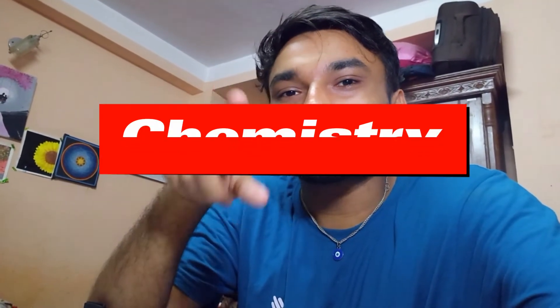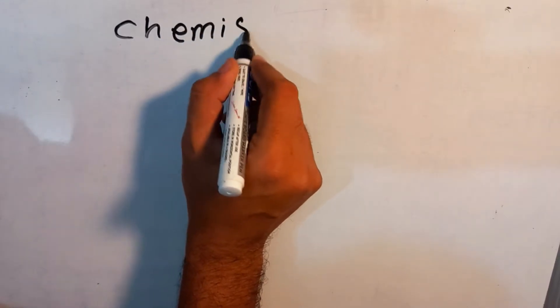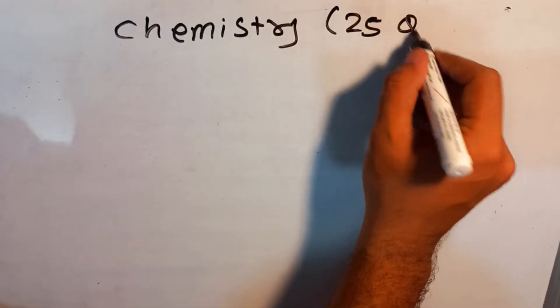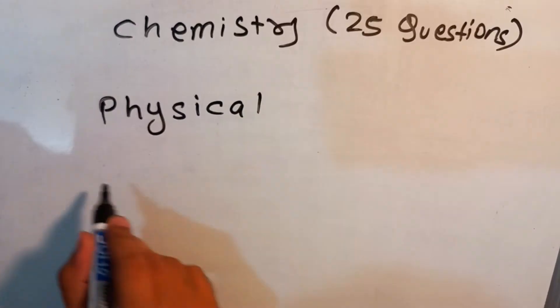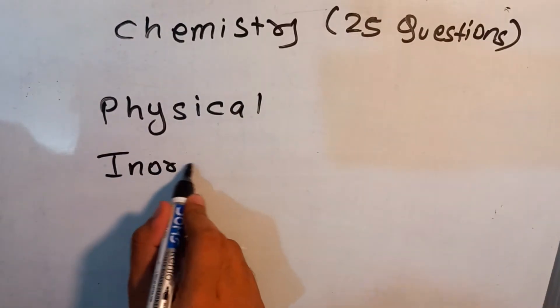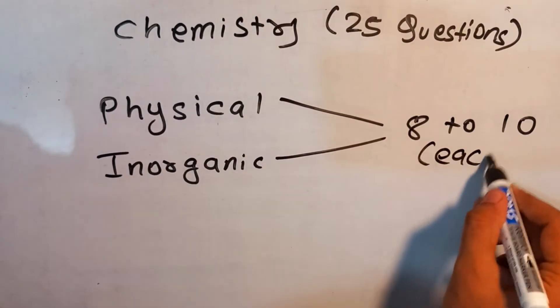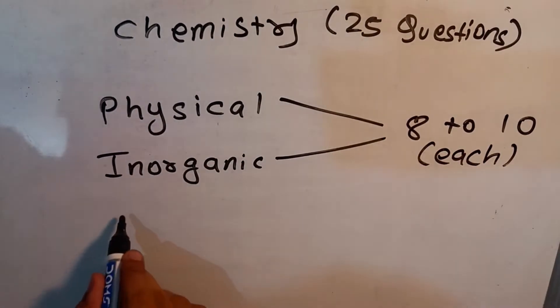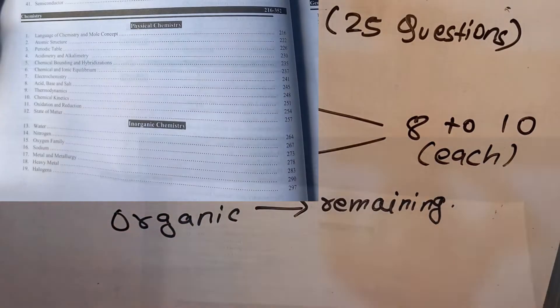Now let's talk about chemistry. Chemistry also holds 25 marks in the entrance examination. 8 to 10 questions are asked from physical chemistry and inorganic chemistry each, and the remaining 7 to 8 questions are asked from organic chemistry. Here is the list of important chapters from each topic.